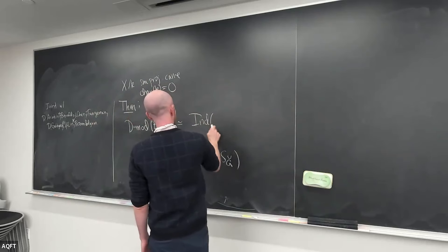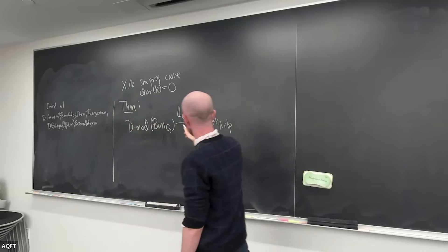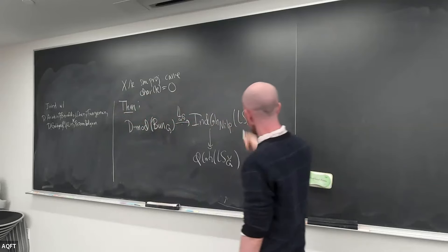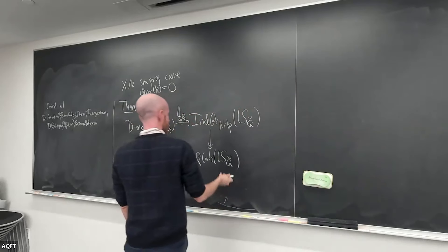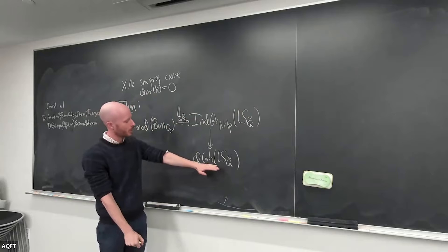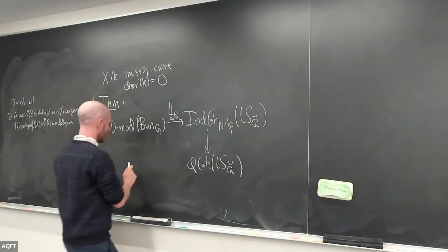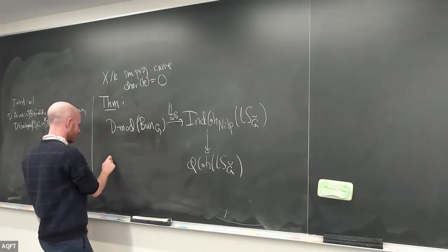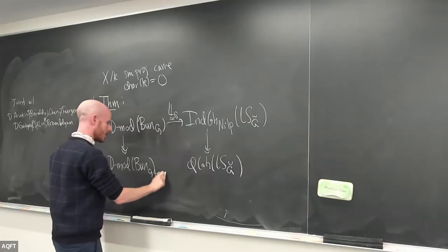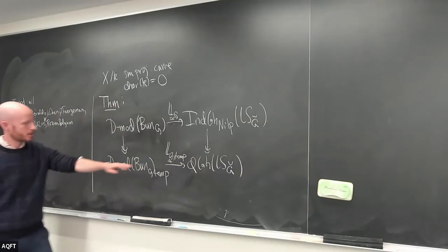So it says that there's a kind of pro-category, which is called LG — this Langlands functor — and it's an equivalence. There's some slightly bigger category that you use, which is called IndCoh-NILP of LocSys-G-check. It's some slightly bigger category. You can think of this as an equivalent name for perfect complexes on LocSys-G-check, and these are going to be certain coherent complexes.